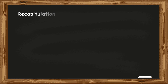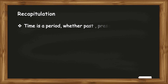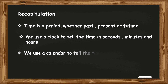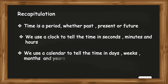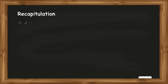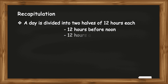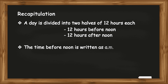A quick recapitulation before we end. Time is a period whether past, present or future. We use a clock to tell the time in seconds, minutes and hours. We use a calendar to tell the time in days, weeks, months and years. A day is divided into two halves of 12 hours each — 12 hours before noon and 12 hours after noon. The time before noon is written as AM. The time after noon is written as PM. A new day begins at 12 midnight.